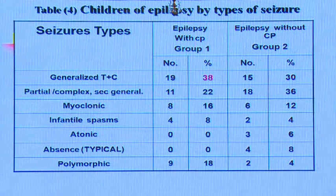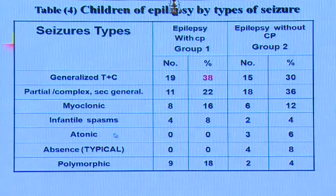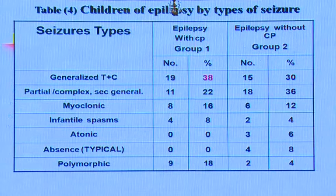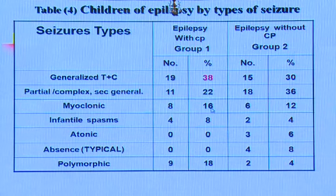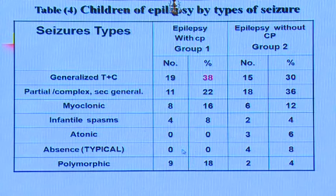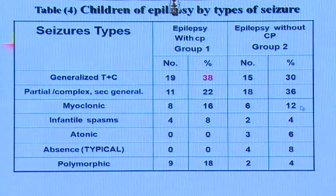Regarding types of seizures: generalized tonic-clonic epilepsy is the major presentation in CP patients — 38% compared to 30% in other groups. This is followed by other epilepsy types. Notably, absence epilepsy is hardly seen in cerebral palsy, whereas in epilepsy without cerebral palsy there is a good percentage of absence epilepsy.